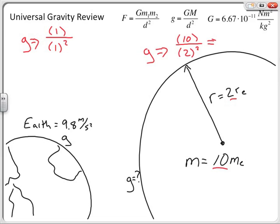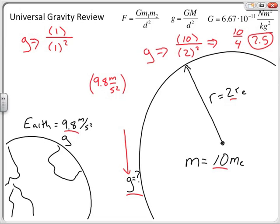This simplifies to 10 divided by 4, which equals 2.5. That's the factor by which g changes — it does not mean g is 2.5 meters per second squared. To find the actual g on this new planet, I multiply the original Earth value of 9.8 meters per second squared by the factor of 2.5, giving g equals 24.5 meters per second squared on this new planet.